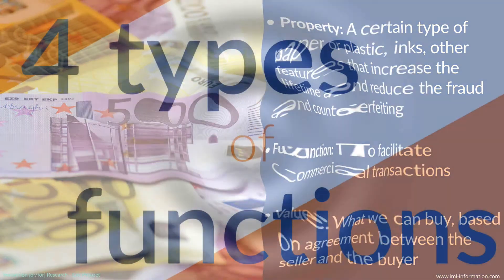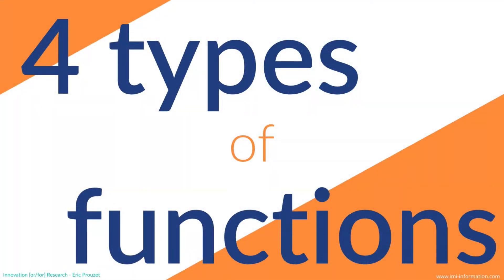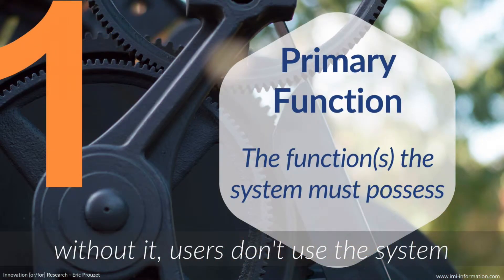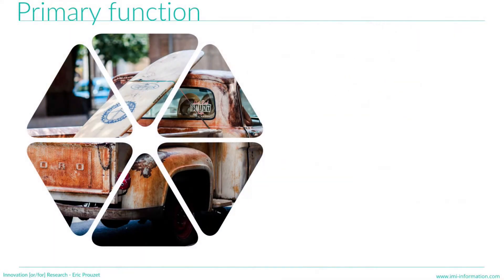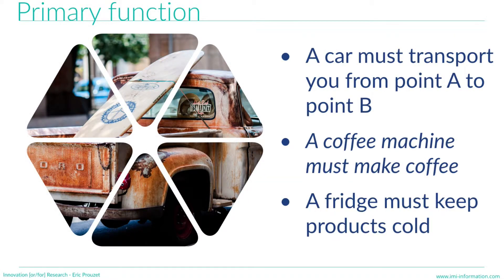Let's go back to the function and define four types of functions. First, the primary function is the function the system must perform — without it, users don't use the system. For example, a car must transport you from point A to point B. If a car doesn't do that, you won't use it or buy it. Similarly, the primary function of a coffee machine is to make coffee, and for a fridge it's to keep products cold.